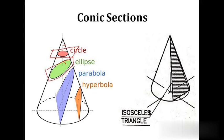The third type is a parabola. A parabola is the section obtained by cutting a right circular cone by a section plane inclined to the axis of the cone and parallel to one of the generators. The section plane is parallel to the left extreme generator and it cuts the base of the cone also. To get a parabola, the section plane should be inclined to the axis, parallel to one of the generators, and should cut the base of the cone.